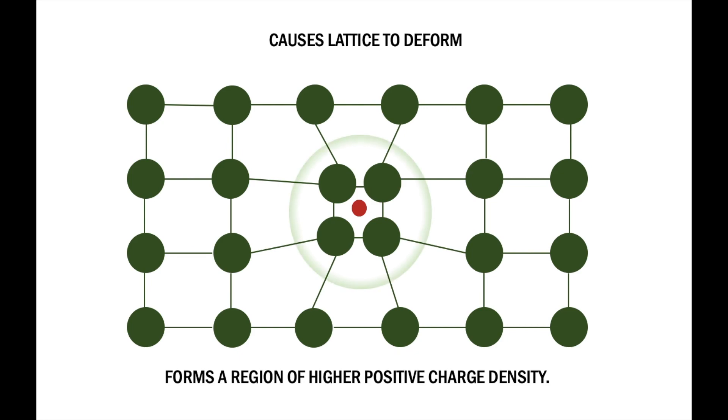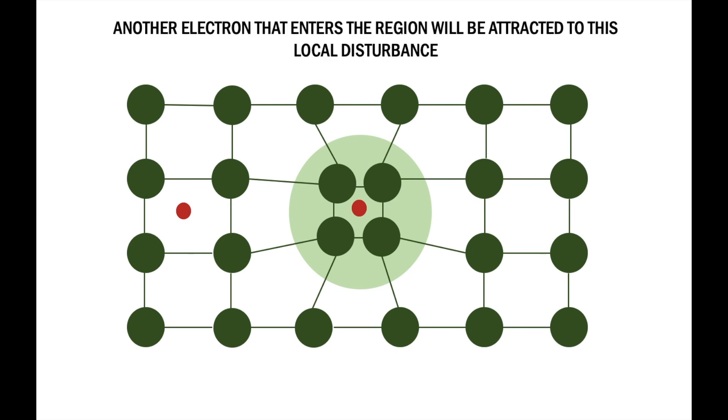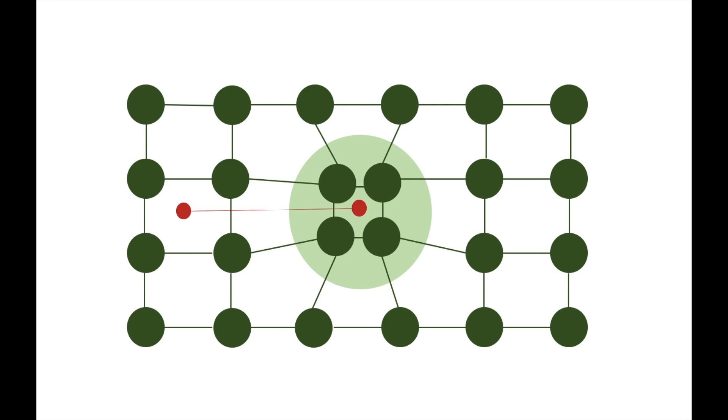This creates an area with a higher density of positive charge. Now, when another electron enters the area, you would expect it to repel the original electrons because like charges repel. However, there are many atoms that are part of this disturbance and this attraction occurs over many, many atoms. So the electron becomes attracted to this distorted area and they bind together forming a Cooper pair.